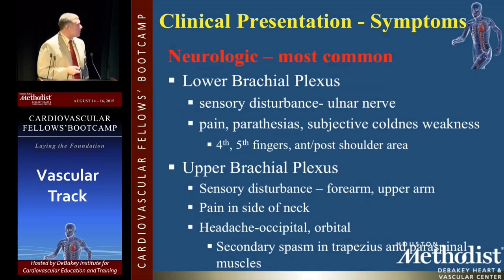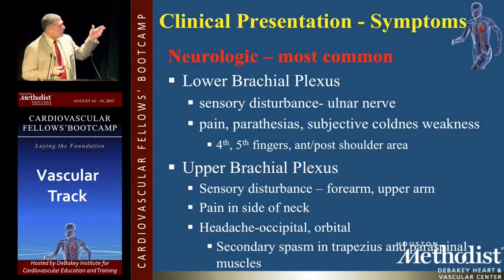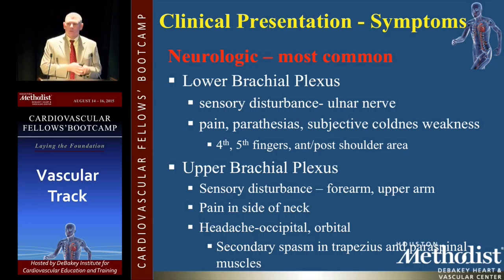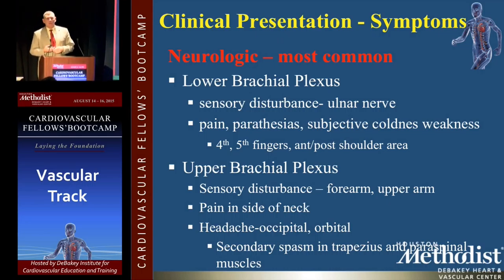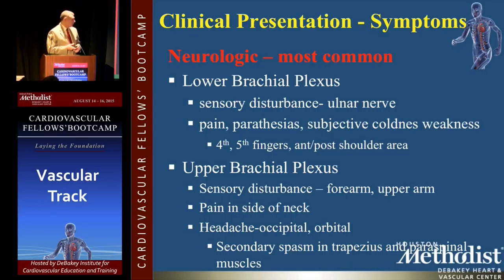Related to trauma and muscle spasm, neurogenic is the most common. You ought to break it up into lower brachial plexus versus upper brachial plexus in regard to how they present. Sensory disturbance in the lower brachial plexus involves the ulnar nerve and the fourth and fifth fingers — pain, paresthesias, subjective coldness and weakness — also anterior and posterior shoulder. As opposed to upper brachial plexus sensory disturbance, which is mainly forearm and upper arm. You need to know your brachial plexus anatomy for that. Pain in the side of the neck, headache — occipital and orbital but not frontal. Somebody who presents with frontal pain does not have TOS until proven otherwise. You can get secondary spasm of the trapezius and the paraspinal muscles.